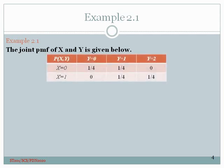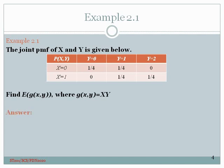Let's look at an example. Suppose the joint PMF of X and Y is given as a table. X can take two possible values, 0 and 1, and Y can take three possible values, 0, 1, and 2. Let's find the expected value of g(x,y) where g(x,y) equals x times y.